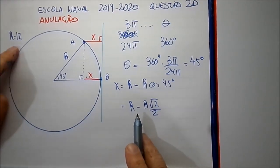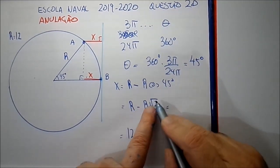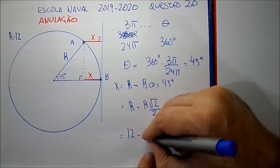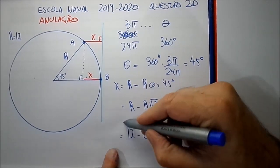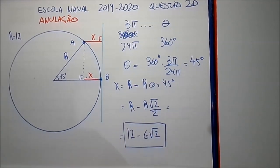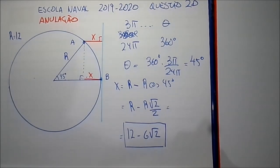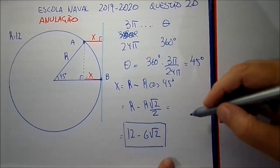Colocando R igual a 12, isso fica 12 menos 12 raiz de 2 sobre 2, que dá 12 menos 6 raiz de 2. Essa é a medida. E nas opções? Não tem. Nem aqueles radicais duplos, se você transformar em radical simples — não dá para transformar aquilo em radical simples. Até se você for fazer na calculadora, vai ver que não dá nada daquilo. Essa é a resposta e ela não está entre as opções.